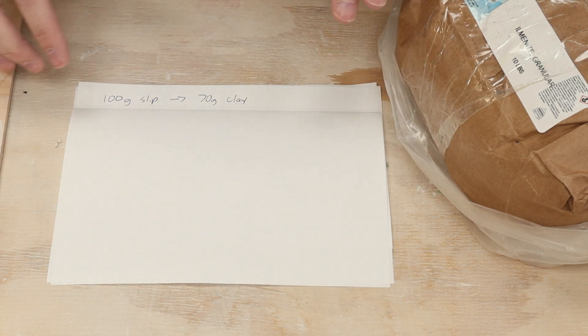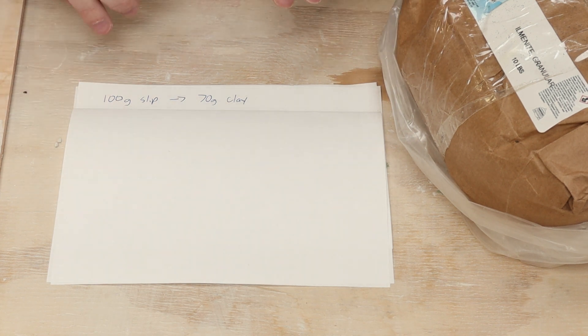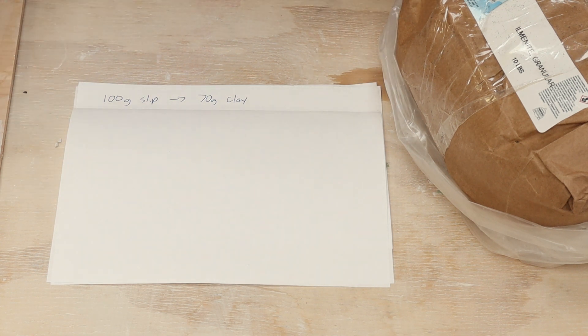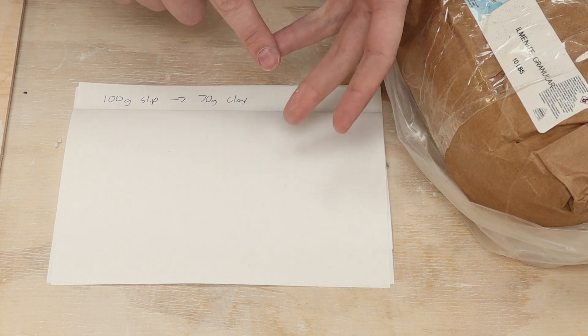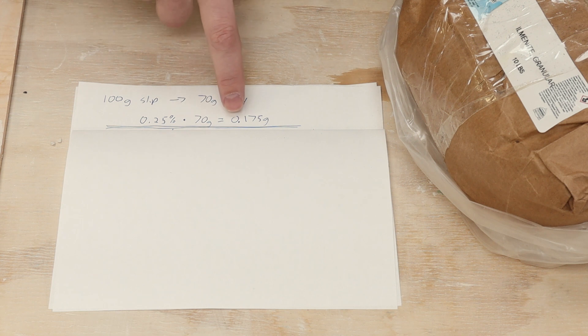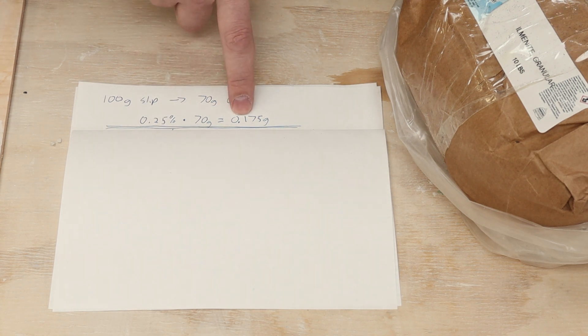All right, so I want to make four different test tiles with different percentages. I've seen recommendations all over the map in terms of how much. I've seen from like a third of a percent all the way up to 10 percent. 10 percent seems crazy much to me, so I'm guessing that it's going to be on the lower end. I really don't know, so I'm going to try it out. So in this set of tests, I'm going to do 0.25, 0.5, 0.75 percent. So 0.25 percent of 70 grams is 0.175 grams. So if I wanted a test tile with 0.25 percent of my material added in, I would need to add in 0.175 grams.